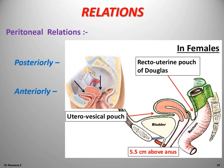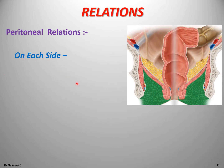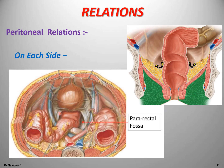In females, the peritoneum reflects onto the posterior surface of the vagina and uterus to form the rectouterine pouch, or pouch of Douglas, the bottom of which lies 5.5 cm above the anus. On each side, only the upper one-third of the lateral surfaces of the rectum are covered by visceral peritoneum, which then reflects onto the lateral pelvic walls forming deep peritoneal fossae called pararectal fossae.